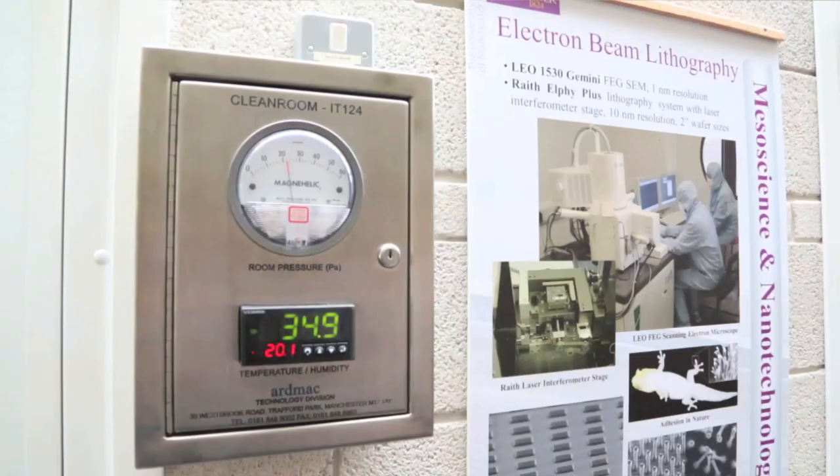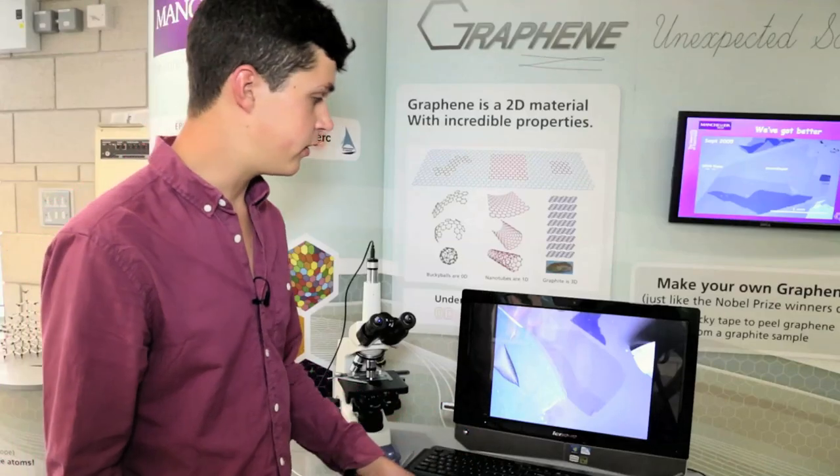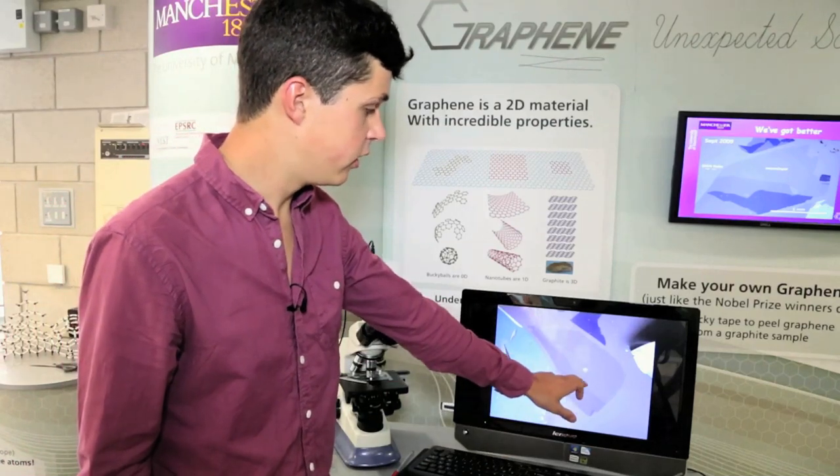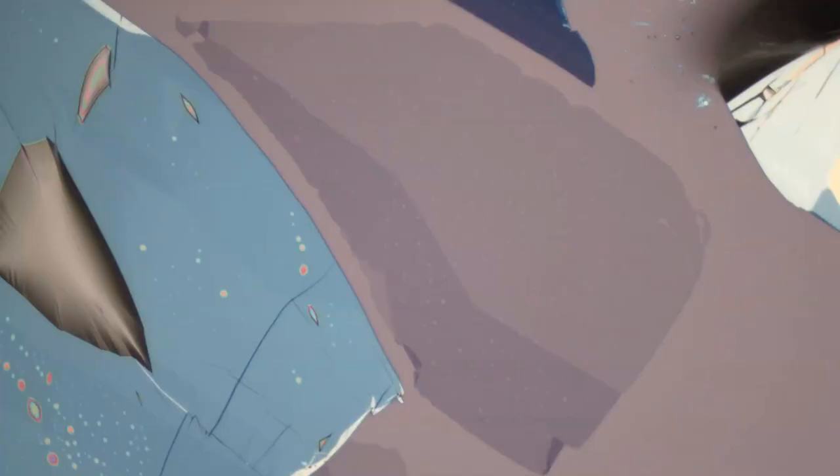Once you've worked with graphene for a while, you get very used to looking at it. And it's very easy for me to say that that is monolayer graphene, while this here is probably two layers, and these bits here are really quite thick.